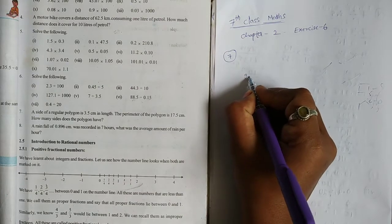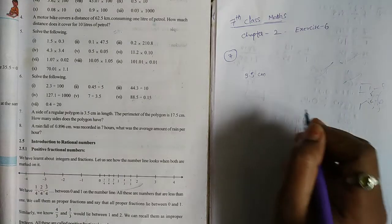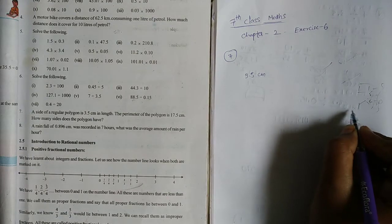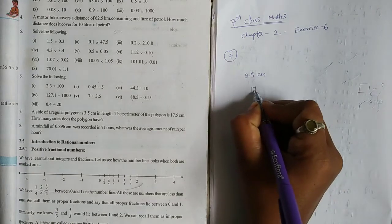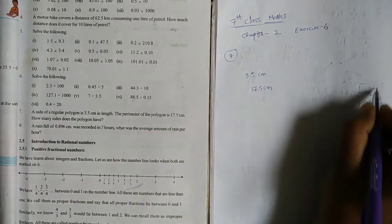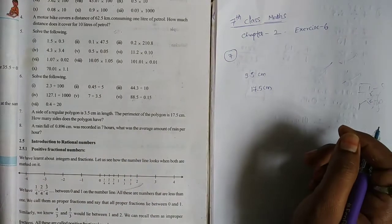It's a side. What length is 3.5 cm. Now, this polygon's perimeter is 17.5 cm. Now, how many sides can be on the polygon? This is my question.